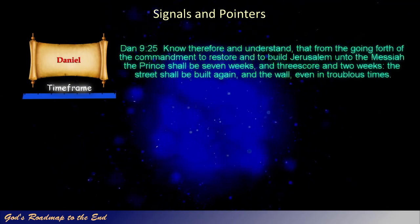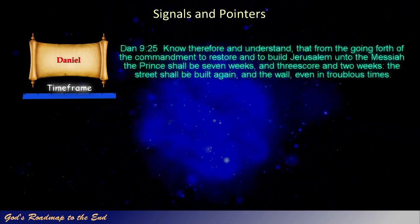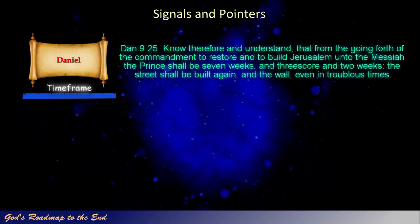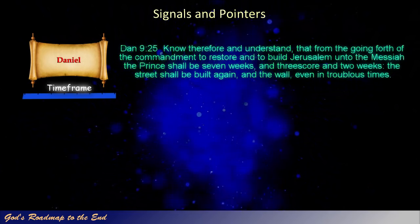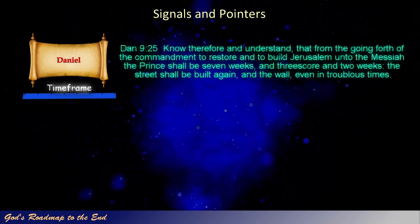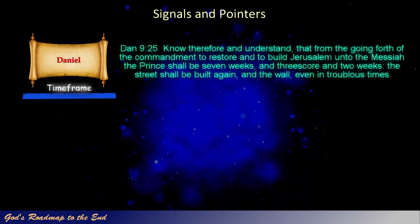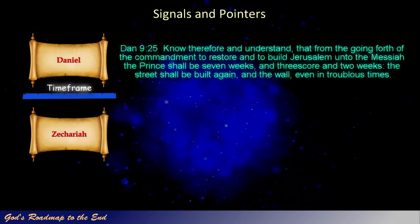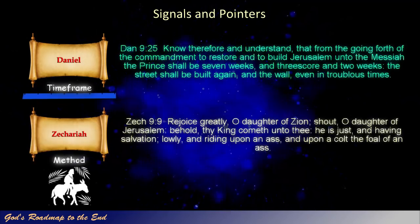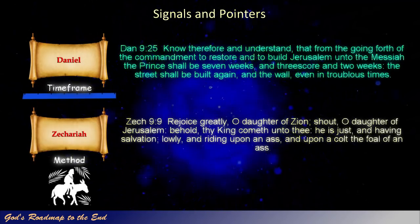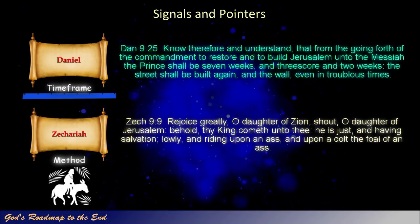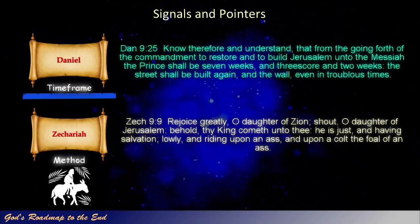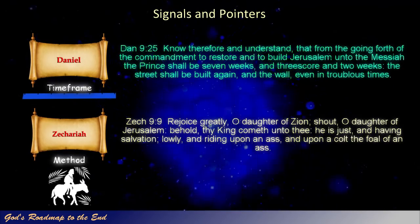Daniel 9:25: 'Know therefore and understand, that from the going forth of the commandment to restore and to build Jerusalem unto the Messiah the Prince shall be seven weeks, and threescore and two weeks: the street shall be built again, and the wall, even in troublous times.' Sixty-nine weeks of years, or 483 years after the decree was given to rebuild Jerusalem by Artaxerxes, Jesus rode into Jerusalem on a donkey. In Zechariah 9 we find a description of how Israel's Messiah would present himself to his chosen nation. Zechariah 9 verse 9: 'Rejoice greatly, O daughter of Zion; shout, O daughter of Jerusalem: behold, thy king cometh unto thee. He is just, and having salvation; lowly, and riding upon an ass, and upon a colt, the foal of an ass.'